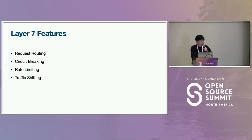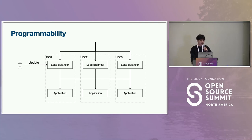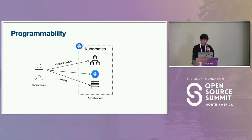The second challenge is about Layer 7 features. Our load balancer must support various L7 functions — it must be intelligent enough to understand L7 protocols, enabling L7-based routing, circuit breaking, rate limiting, and traffic shifting. The third challenge is programmability. We wanted clients to update the configuration of load balancers themselves, rather than calling an administrator whenever an update is required. All functions should be real-time adjustable by APIs. The challenge is that user-invoked APIs work synchronously, while Kubernetes is asynchronous, so there is a need to bridge the gap between these two.